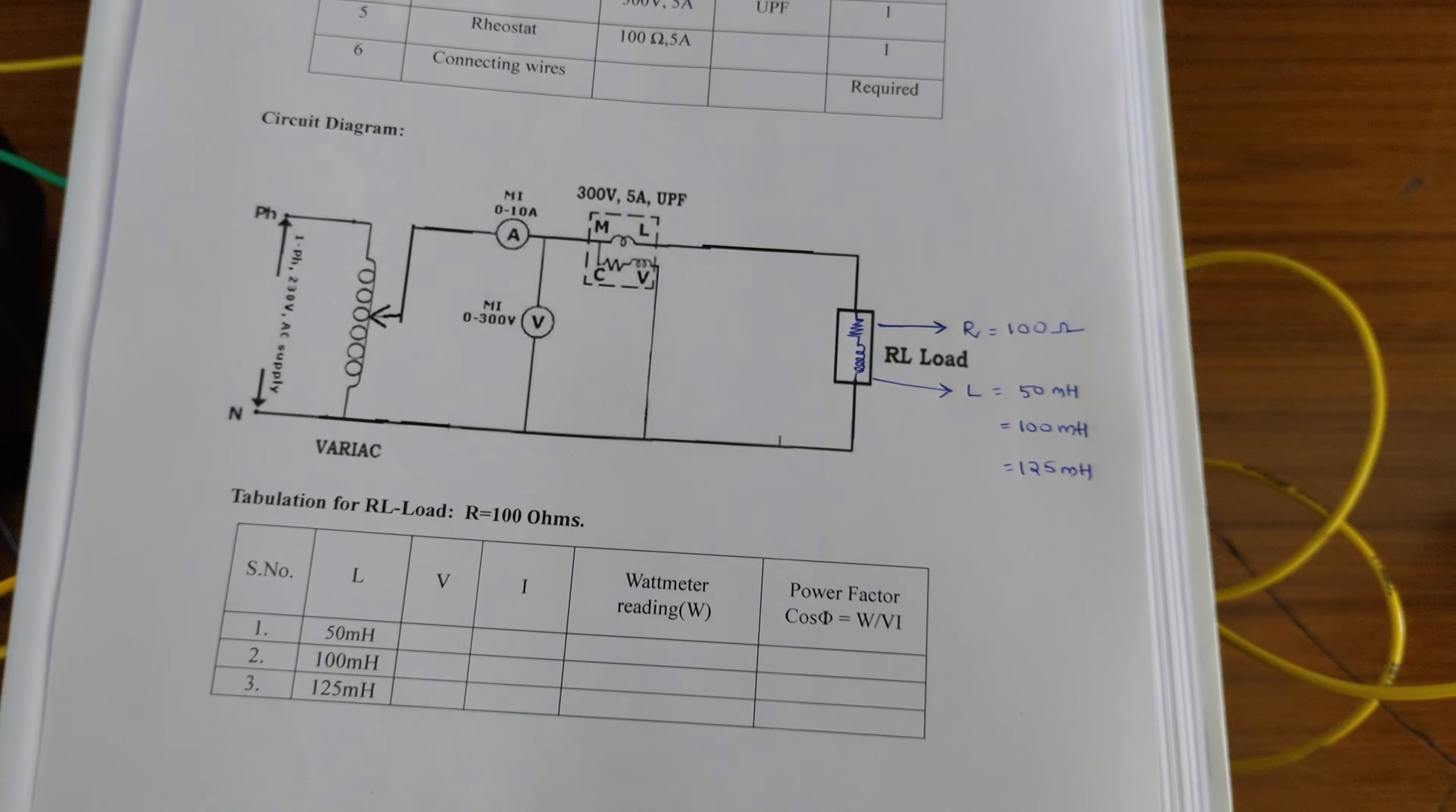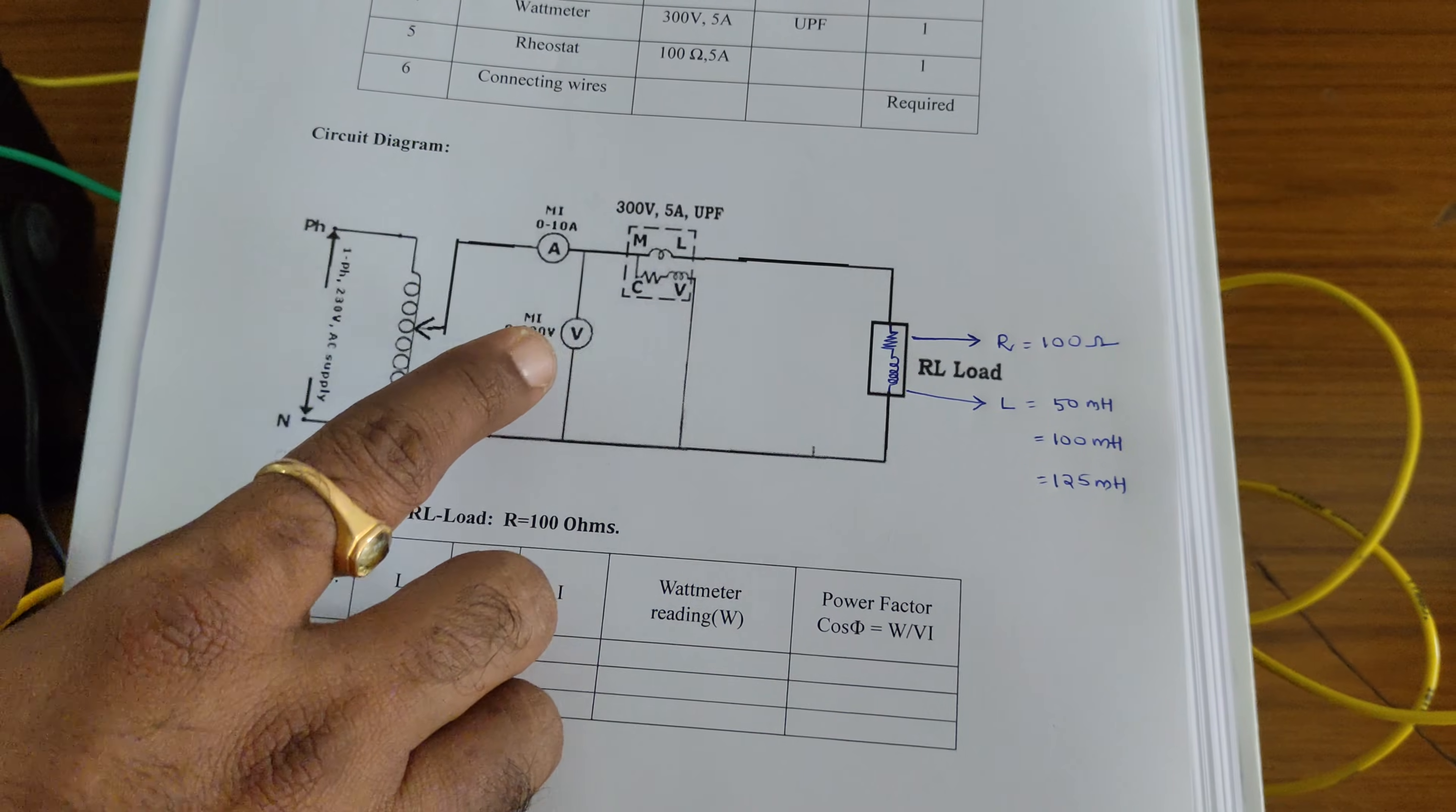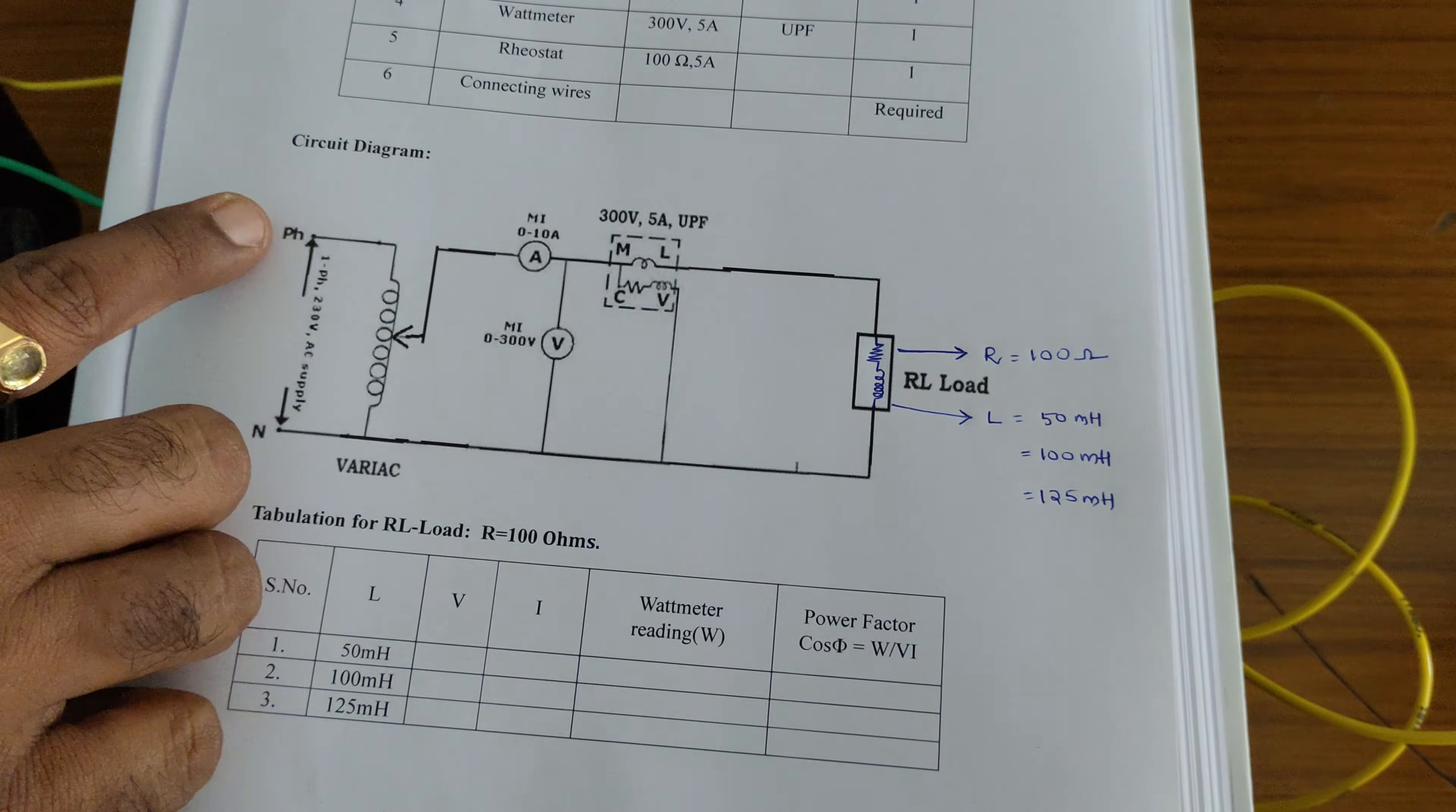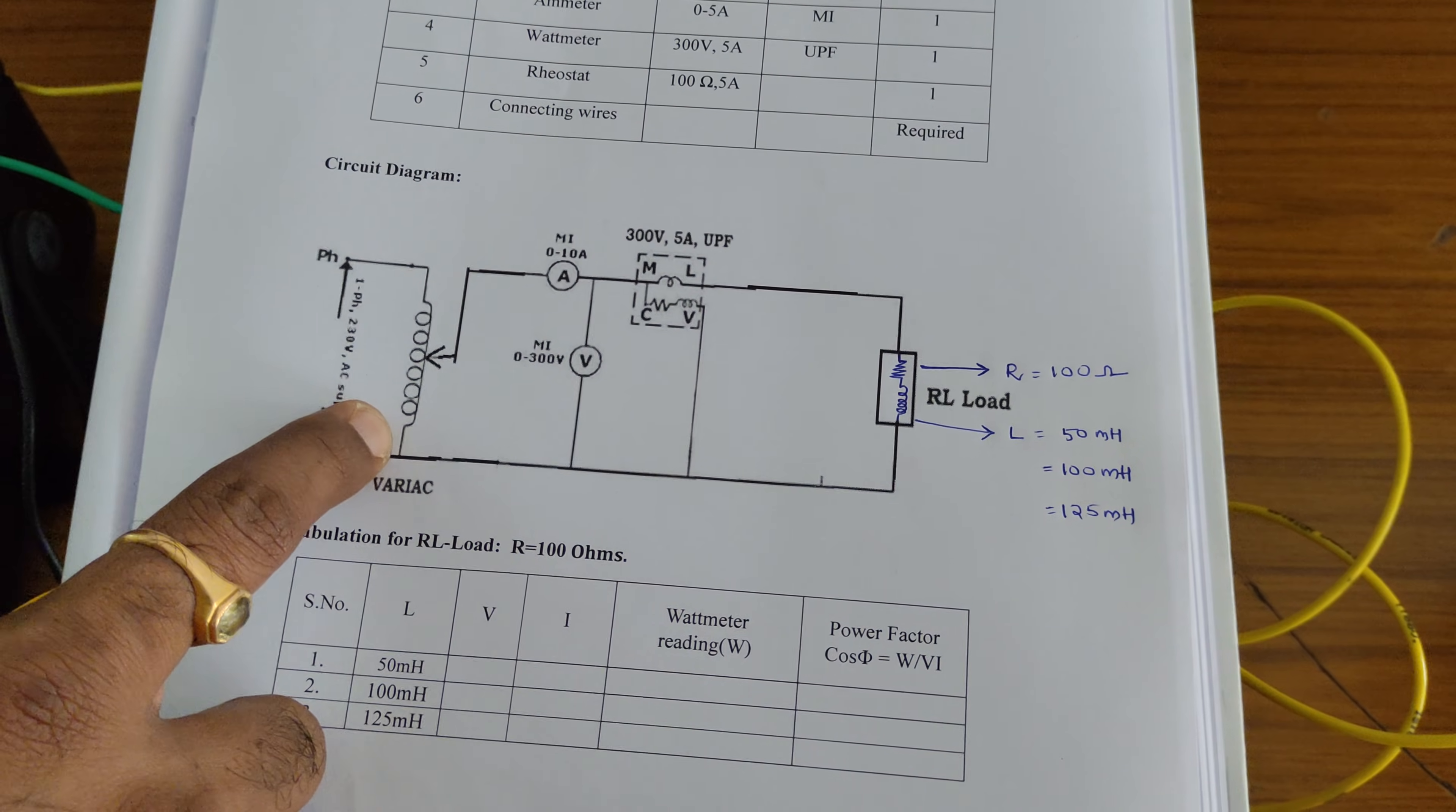The components required here are ammeter followed by voltmeter, wattmeter and resistive load, inductive load. This one is the supply phase neutral and this one is the variac or autotransformer.